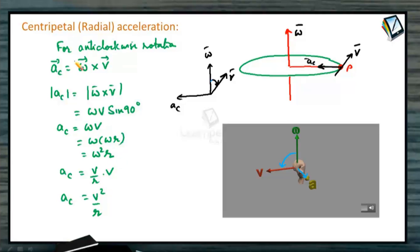In anti-clockwise rotation, in vector form, centripetal acceleration can be written as AC = ω × V.